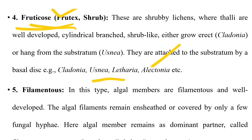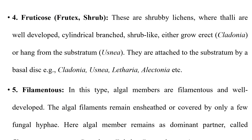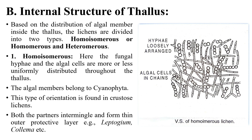Fruticose lichen has well-developed, cylindrical, branched, shrub-like, erect thalli. An example is Cladonia. In the filamentous type, the algal members of the lichen are filamentous and well-developed; the algal filament remains ensheathed or covered by only a few fungal hyphae, and this component acts as the dominant partner.